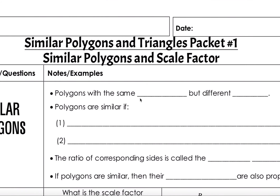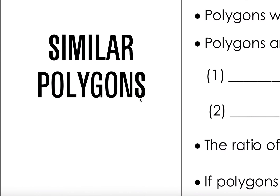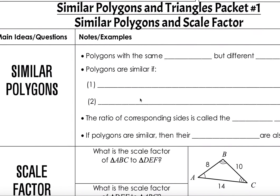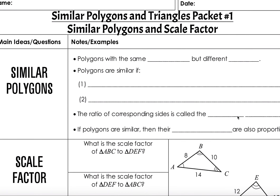Alright, let's look at this packet. We're talking about similar polygons. Similar polygons are polygons that are similar — they're not congruent, they're just similar. So they have the same shape but a different size. They look exactly the same, just one's bigger and one's smaller.